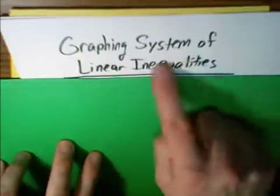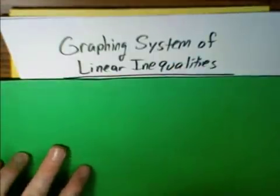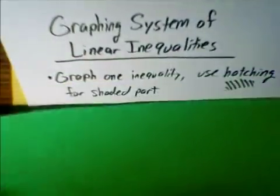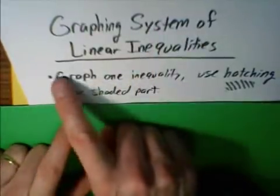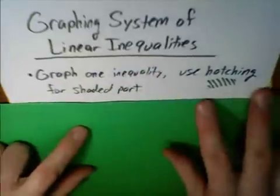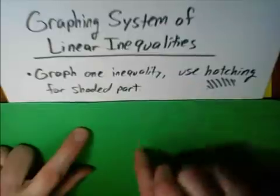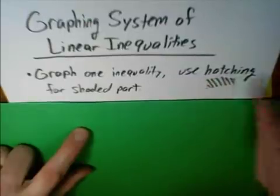Remember, every time you graph an inequality, it's got a shaded region. So how do we do it? First, we're going to graph one of the inequalities. Again, the system is probably two inequalities. We're going to graph one inequality, and we're going to use hatching for the shaded part. And hatching just simply means a series of pen or pencil strokes.